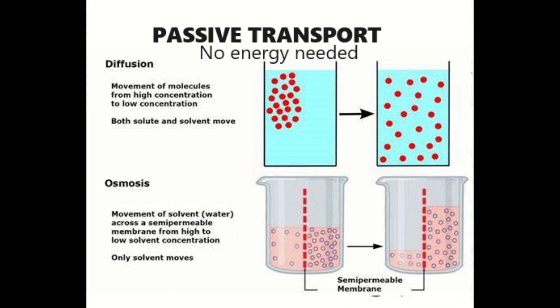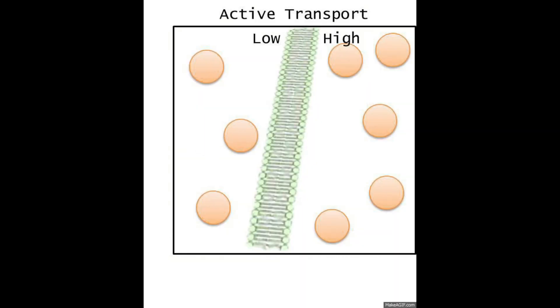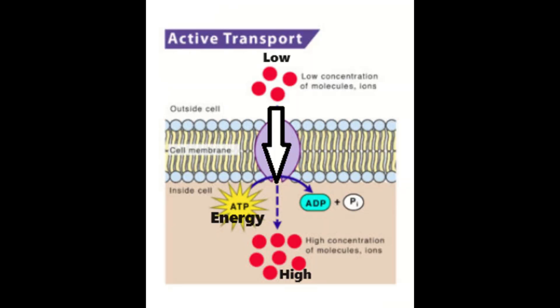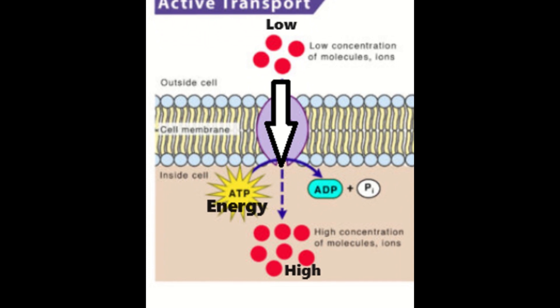Now osmosis and diffusion are both passive transport processes which happen naturally without the need for energy. But with active transport, energy is required to get molecules moving against a concentration gradient from low to high concentration.